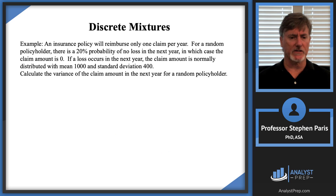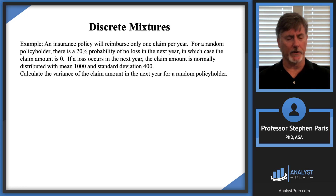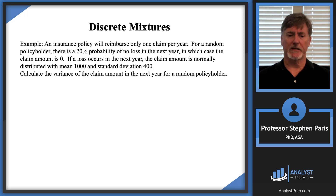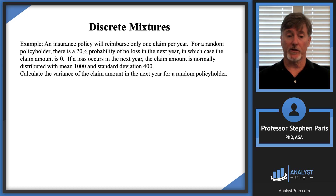Let's look at one more example — a very common type on actual exams. An insurance policy reimburses only one claim for a random policyholder. There's a 20% probability of no loss (claim amount = 0), and with 80% probability the claim amount is normally distributed with mean 1000 and standard deviation 400. We want the variance of the claim amount in the next year.